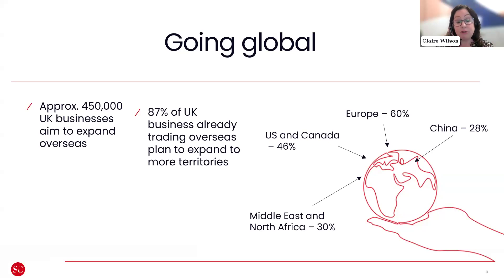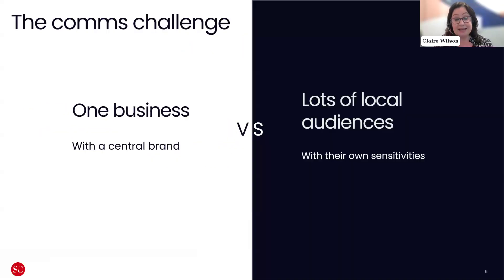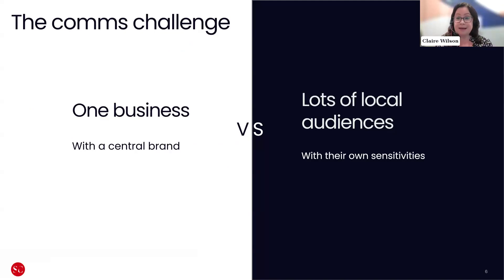The other thing we're seeing is that becoming more globalised presents a range of challenges — not just for logistics in terms of setting up operations in new locations, but also for communications. How do you speak to a global audience whilst maintaining a central brand, but adapting content in a way that resonates with lots of different audiences with their own sensitivities and priorities? This is a balancing act, and finding the hook that resonates with all audiences without diluting the brand is a really difficult but important challenge.